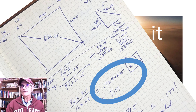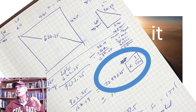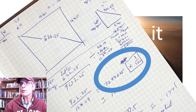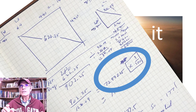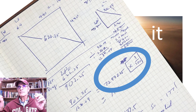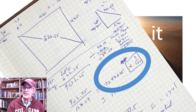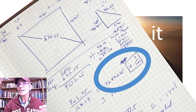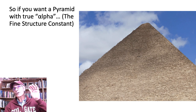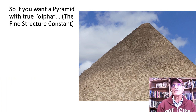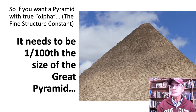The problem is, to get to the fine structure constant there are two zeros in front of that seven, so you have to multiply what Alan showed by 1 over 100. He didn't say that — he's not hiding it. If you look at numbers as dimensionless, you can say 0.1 is the same as 100 in the sense that you can move the decimal point. But to be honest, Alan, it is not the fine structure constant — it's 1/100th of the fine structure constant. So if you want a pyramid that's got true alpha, it needs to be 1/100th the size of the Great Pyramid.